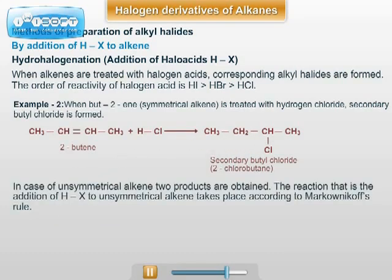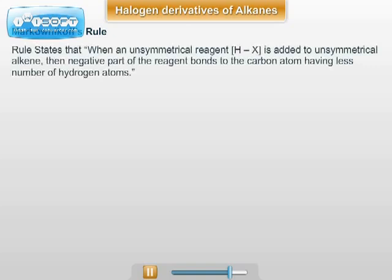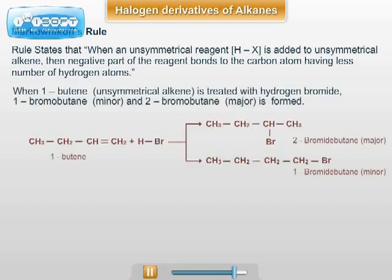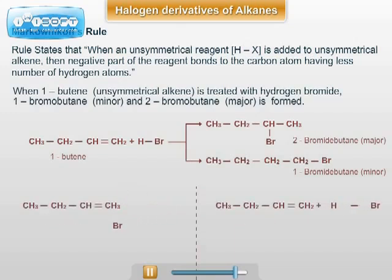In the case of unsymmetrical alkenes, two products are obtained. The addition of HX to unsymmetrical alkenes takes place according to Markovnikov's rule, which states that whenever there is addition of an unsymmetrical reagent to an unsymmetrical alkene, the negative part of the reagent attaches to the carbon atom containing fewer hydrogen atoms. Therefore, but-1-ene reacts with HBr to give 2-bromobutane as the major product and 1-bromobutane as the minor product.